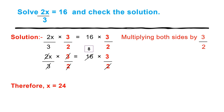Now look at the second example. Solve 2x by 3 is equal to 16 and check the solution. Look at the solution. 2x by 3 into 3 by 2 is equal to 16 into 3 by 2. Now both sides we have to multiply by 3 by 2.